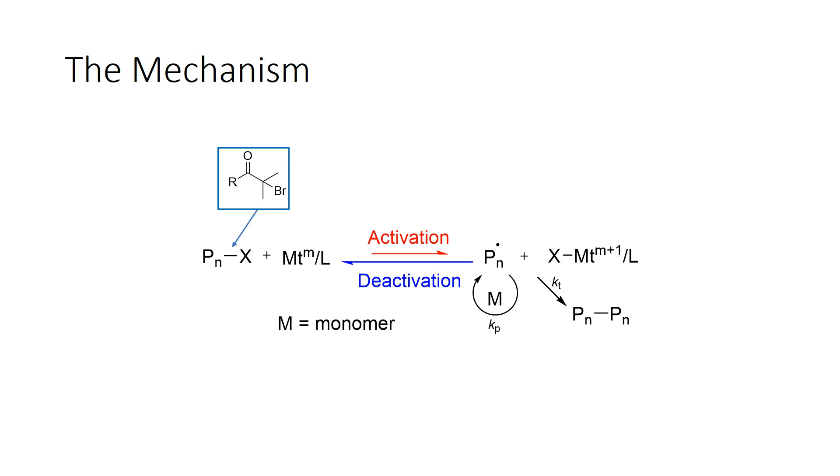Here, the X, the halogen, is a bromide. And it's a very activated bromide. It's sitting on a tertiary carbon right next to a carbonyl group, so it's very activated. And this is a classic structure of an ATRP initiator.